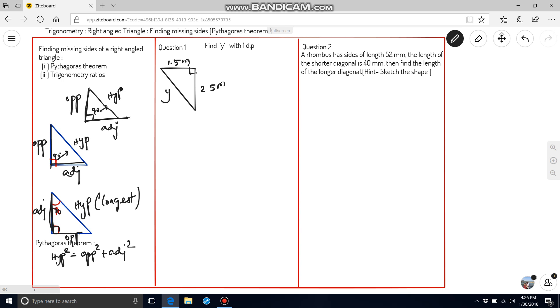In question 1, in this diagram, find y with one decimal place correction. Before that, we should know what is adjacent, opposite and hypotenuse. This is 90 degree. 90 degree opposite side is y, which is known as hypotenuse. And, this horizontal line will be adjacent and the vertical line will be opposite.